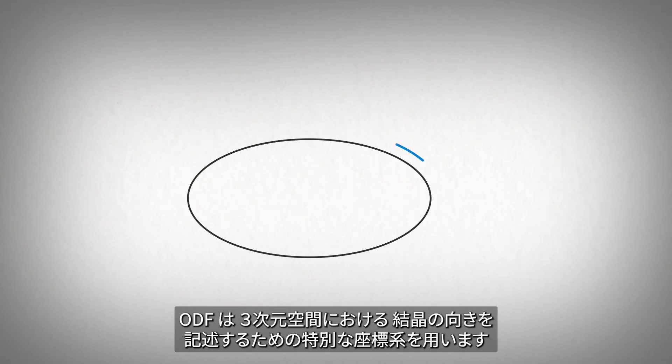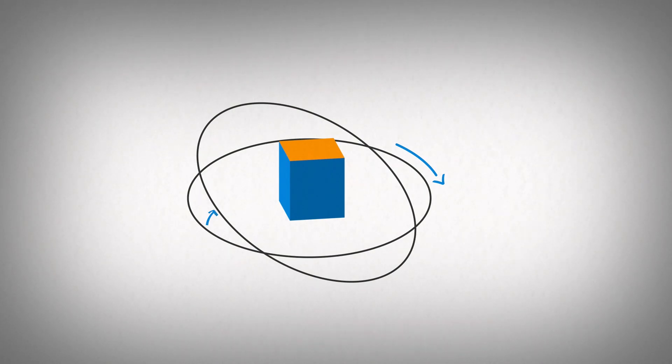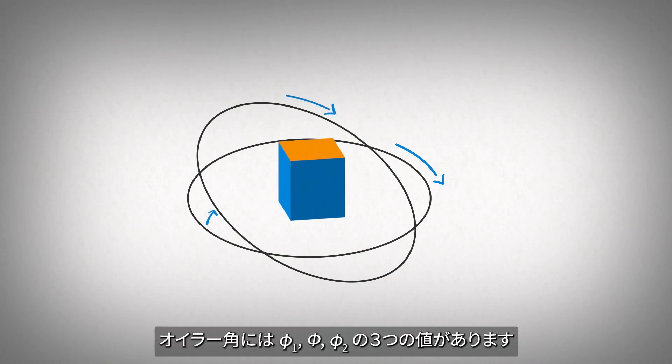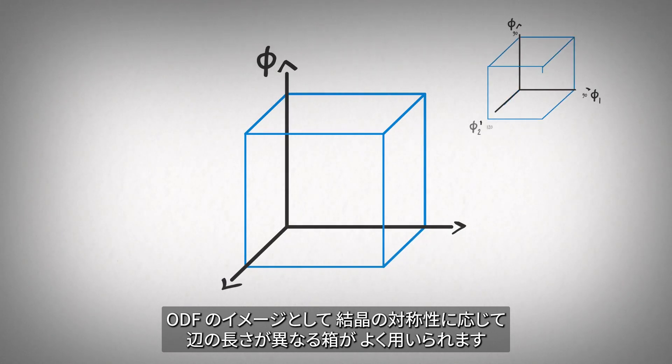The ODF uses a special coordinate system used to describe the orientation of crystallites in 3D space called Euler angles. Euler coordinates have three values: phi 1, phi, and phi 2.